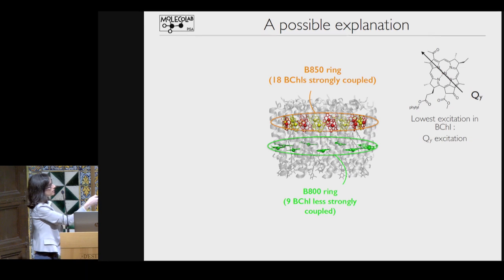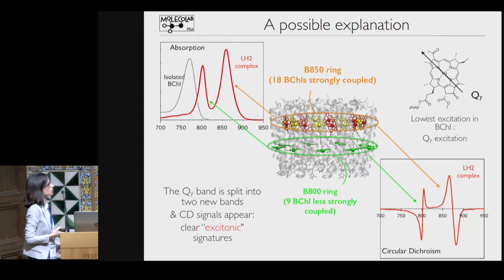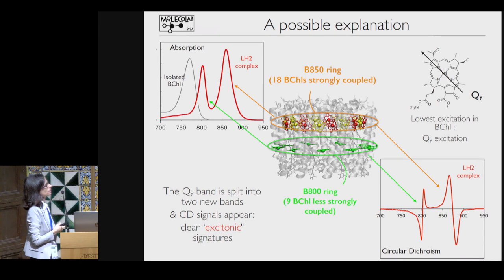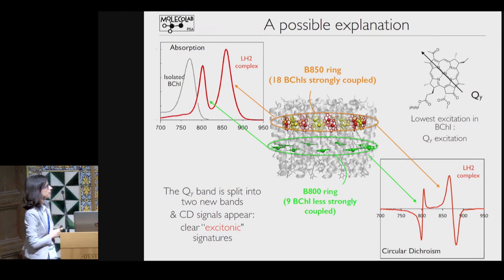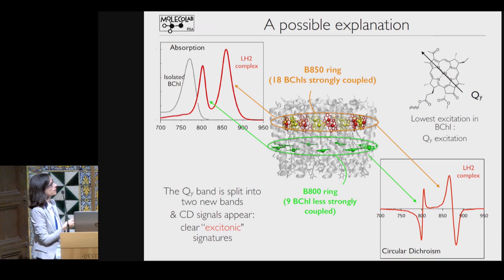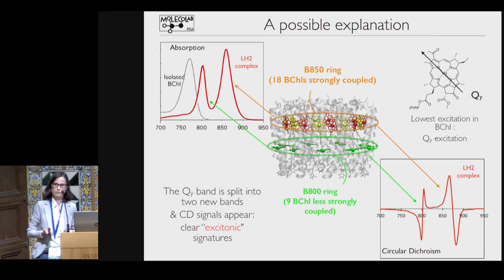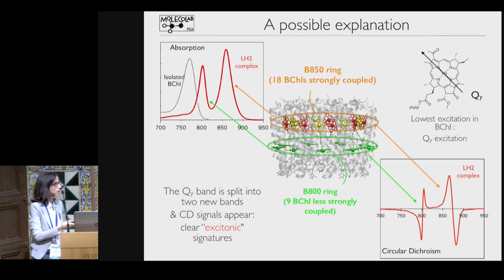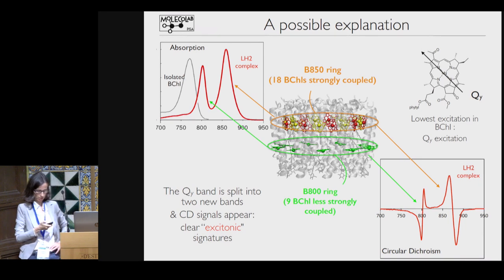If I look at the QY excitation, this is the typical transition dipole, and I can say that the two peaks are due to shared excitation in the two rings which compose the complex: the so-called B850 ring and the other ring, composed by 18 and 9 chlorophylls. This means the QY band has been split due to the coupling between excitations into new excitonic bands. The excitonic nature is confirmed by circular dichroism, because single bacteriochlorophylls have no CD signal—they are not chiral—but when arranged in this three-dimensional structure, two couplets appear corresponding to these two excitations.